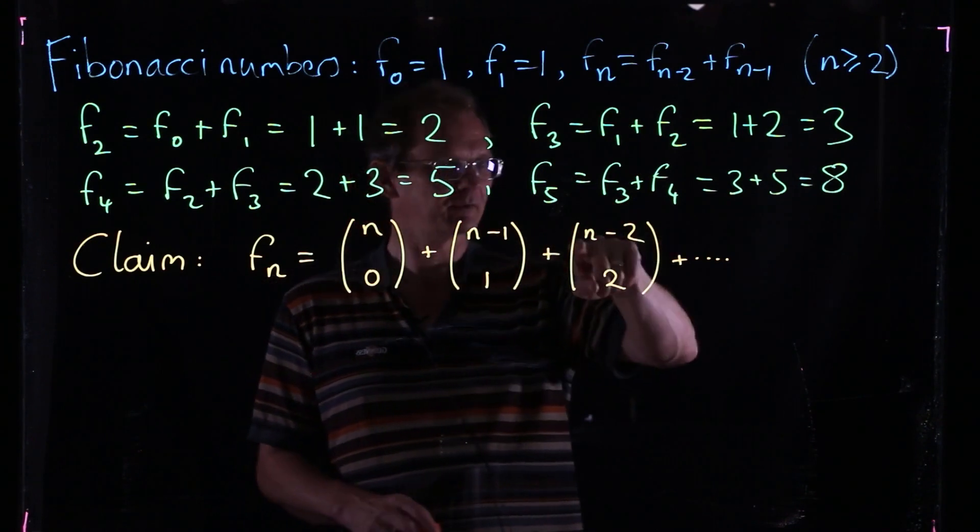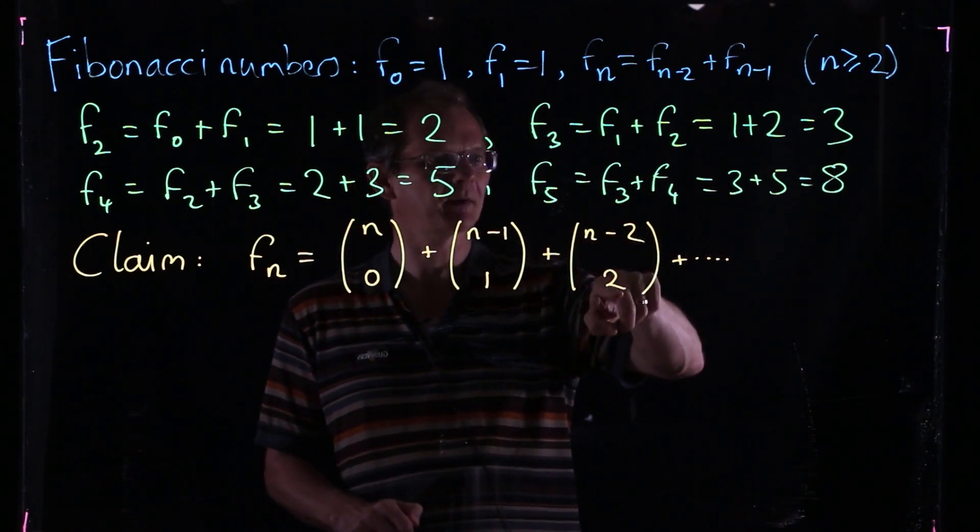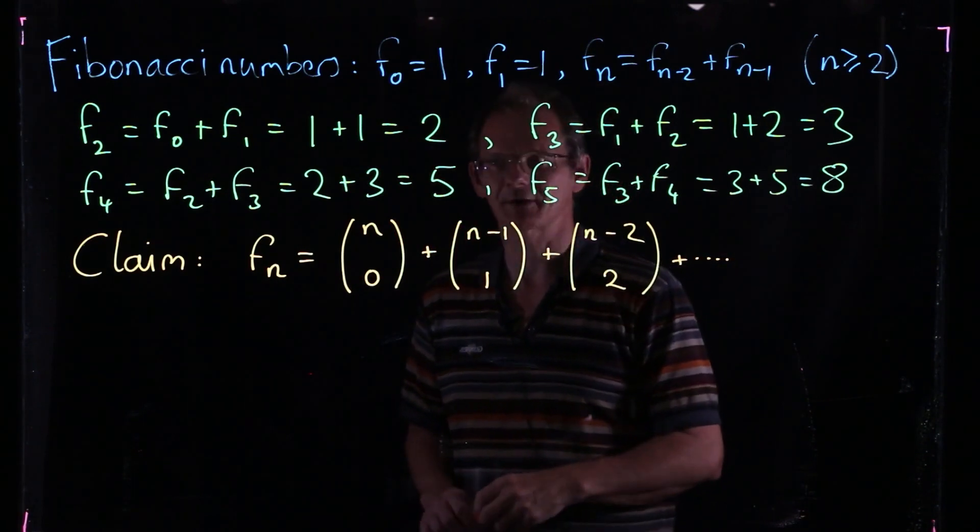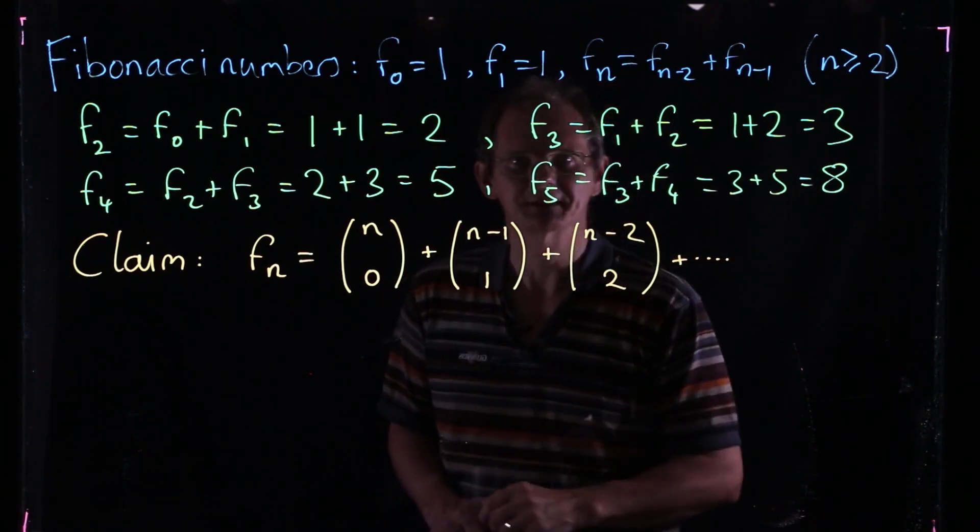So eventually in this sequence, the top number will become less than the bottom number, and then the binomial coefficients from that point on will be 0. So there's really only finitely many terms in this sum.